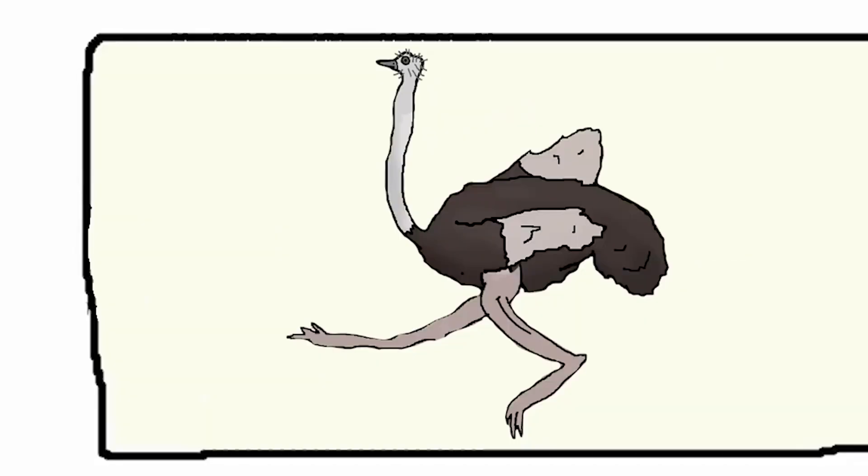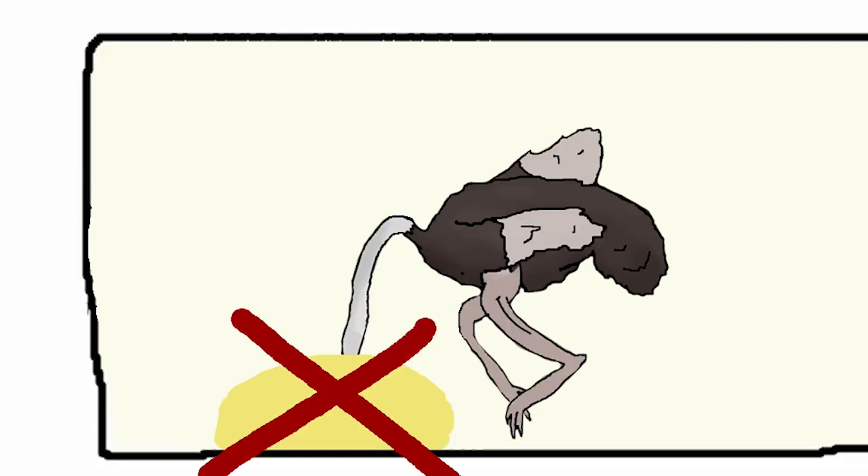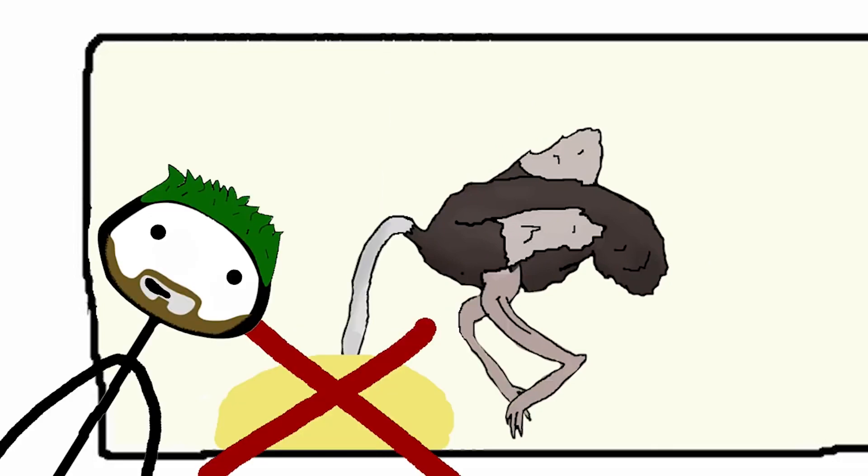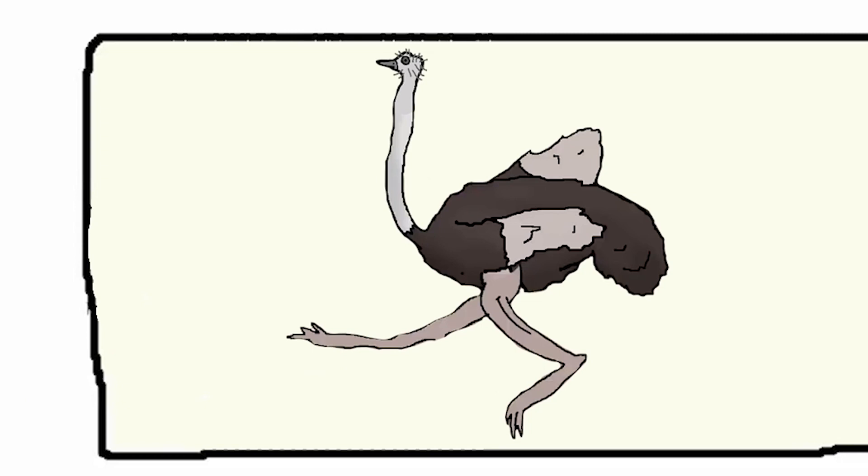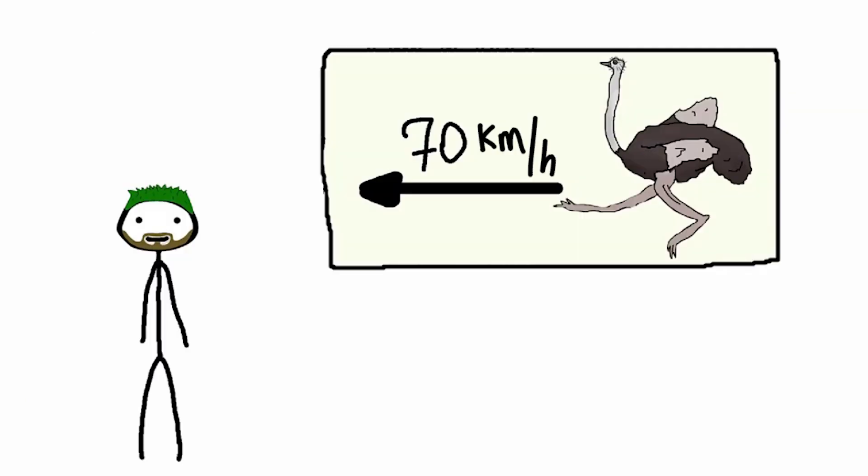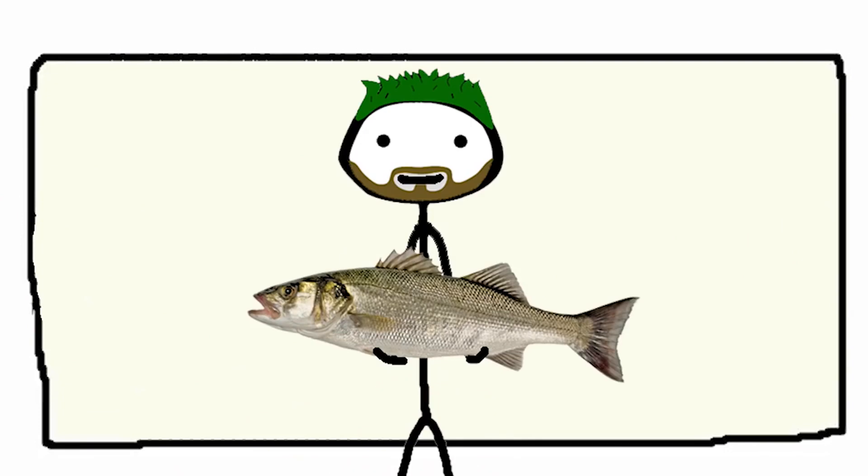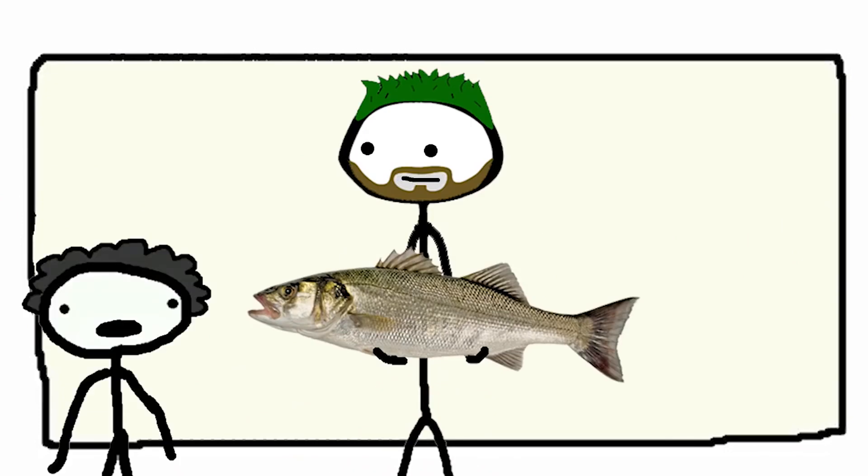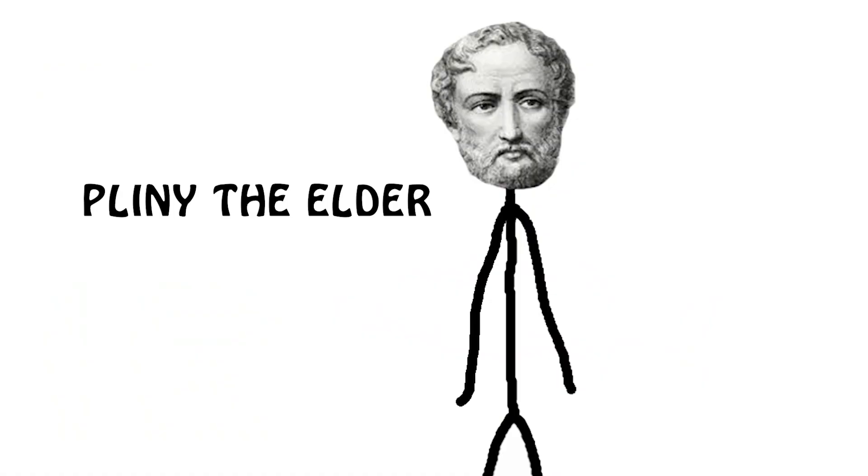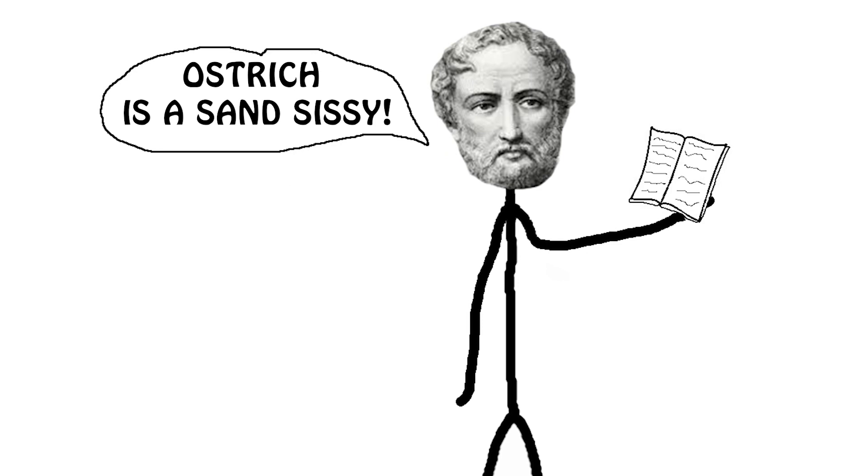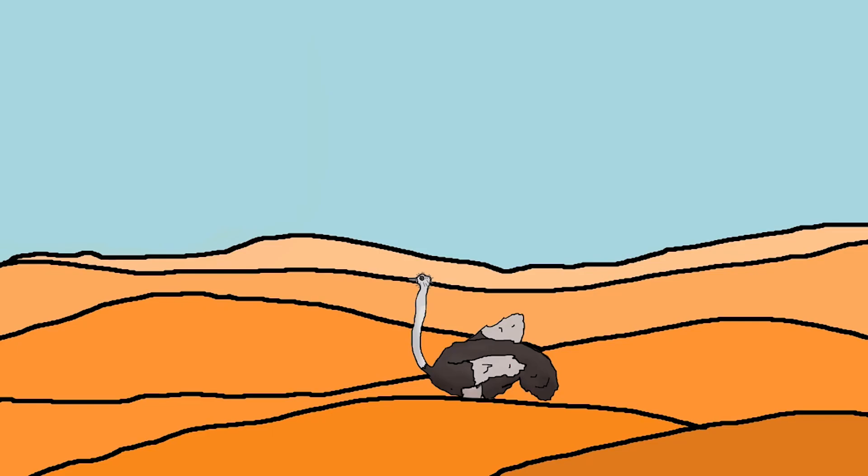Ostriches are number seven. Ostriches, whatever you may think, never hide their heads in the sand, especially in case of danger. What for? If they can reach a speed of 70 km per hour and in case of danger simply run away. Well, then who came up with the idea that ostriches hide their heads in the sand? It was the Roman writer and philosopher Pliny the Elder, who wrote that the ostrich partially buries itself in the sand when it feels threatened. But in fact, he was just probably confused.